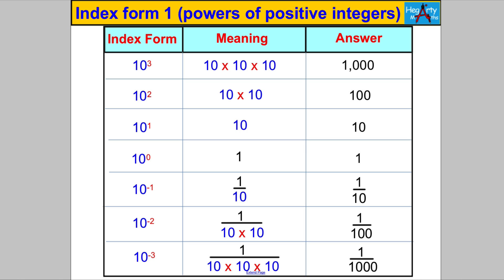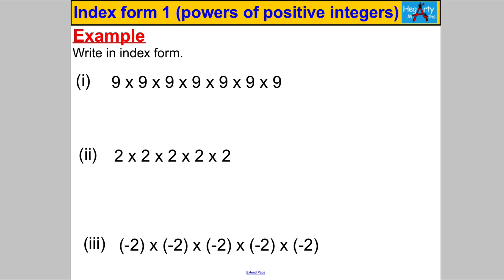Let's do some questions. Write the following in index form: 1×9×2×9×3×9×4×9×5×9×6×9×7 — that's nine nines multiplied together. Base is 9, exponent is 7, so the answer is 9 to the power of 7. Next: negative 2 times negative 2 times negative 2 times negative 2 times negative 2 is negative 2 to the power of 5. It's really important to write the negative 2 in brackets — I'll come back to that.